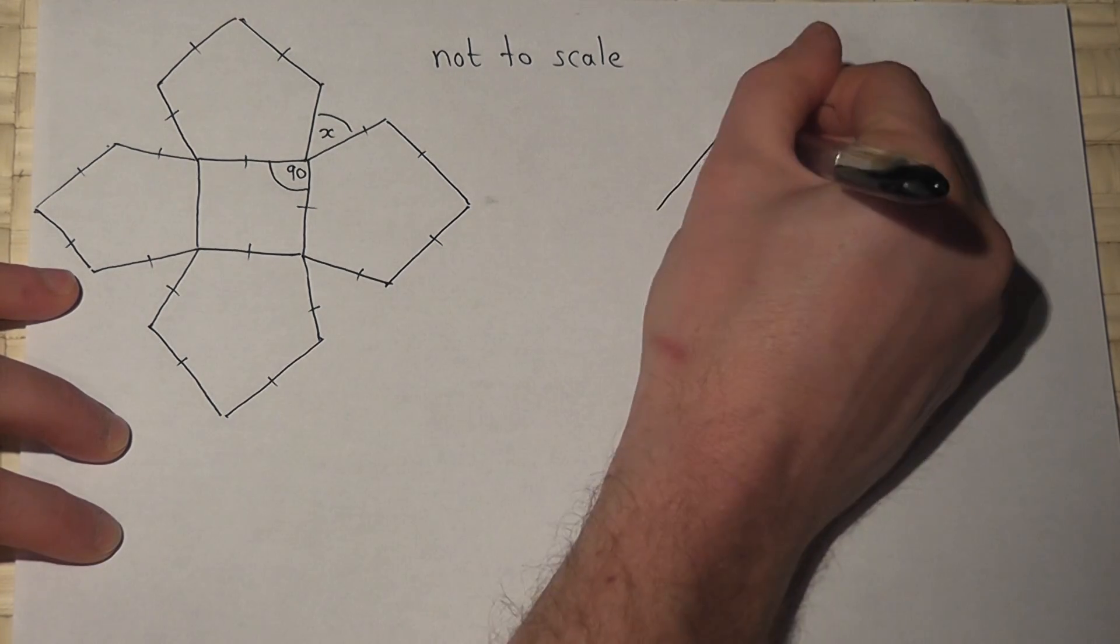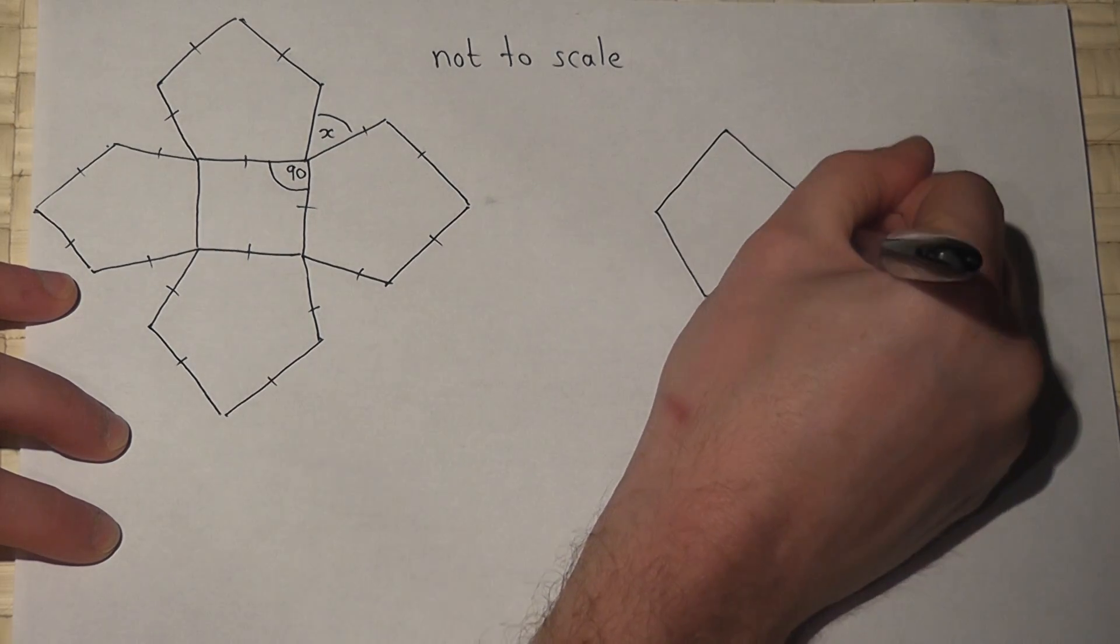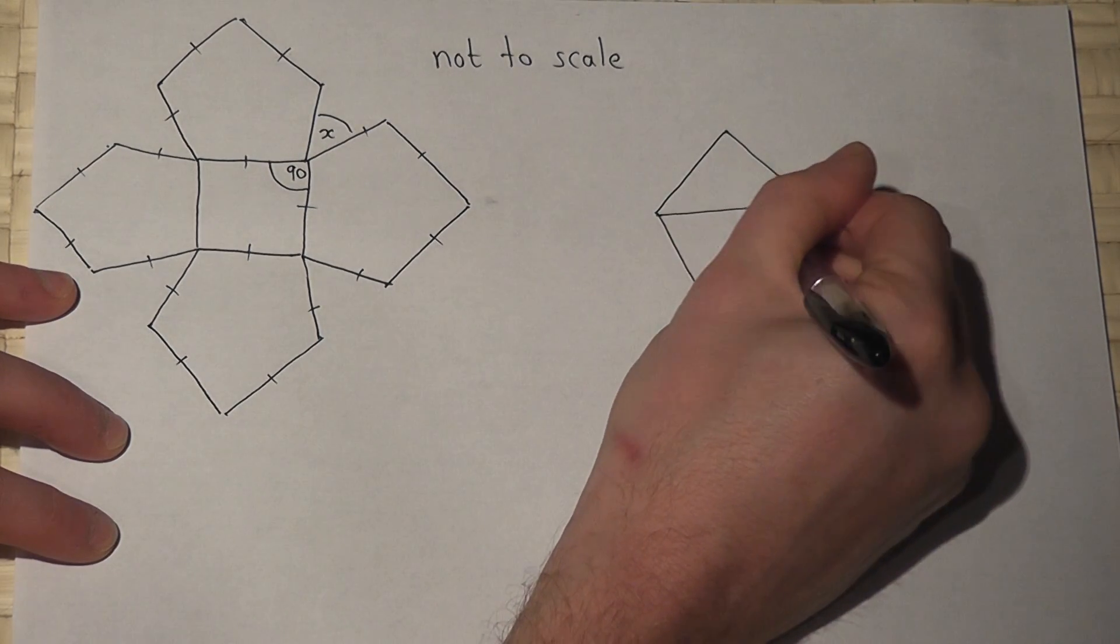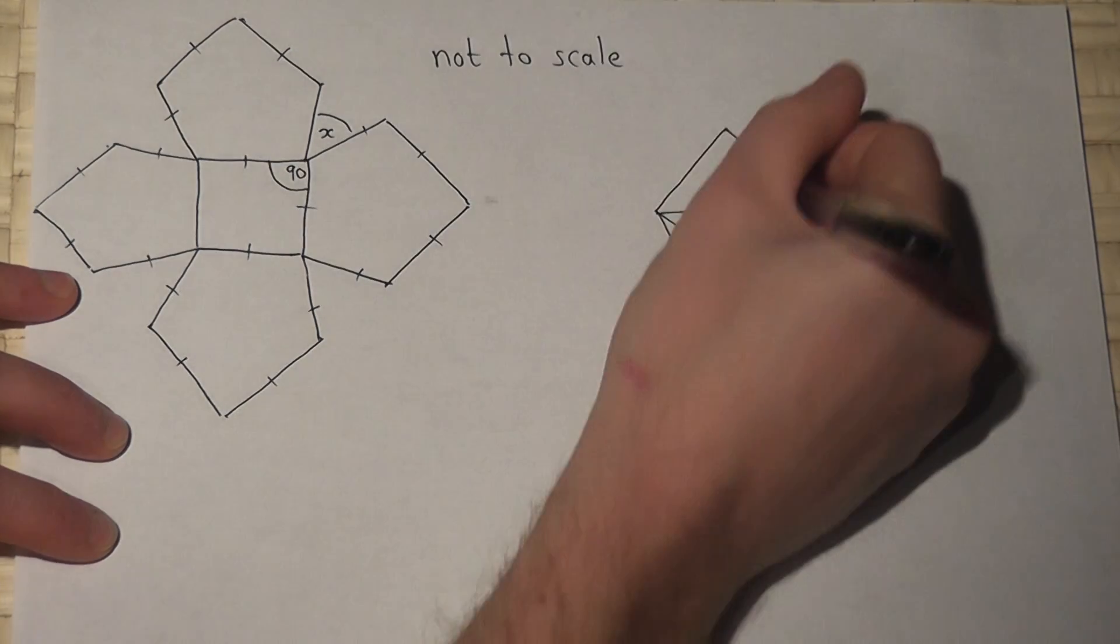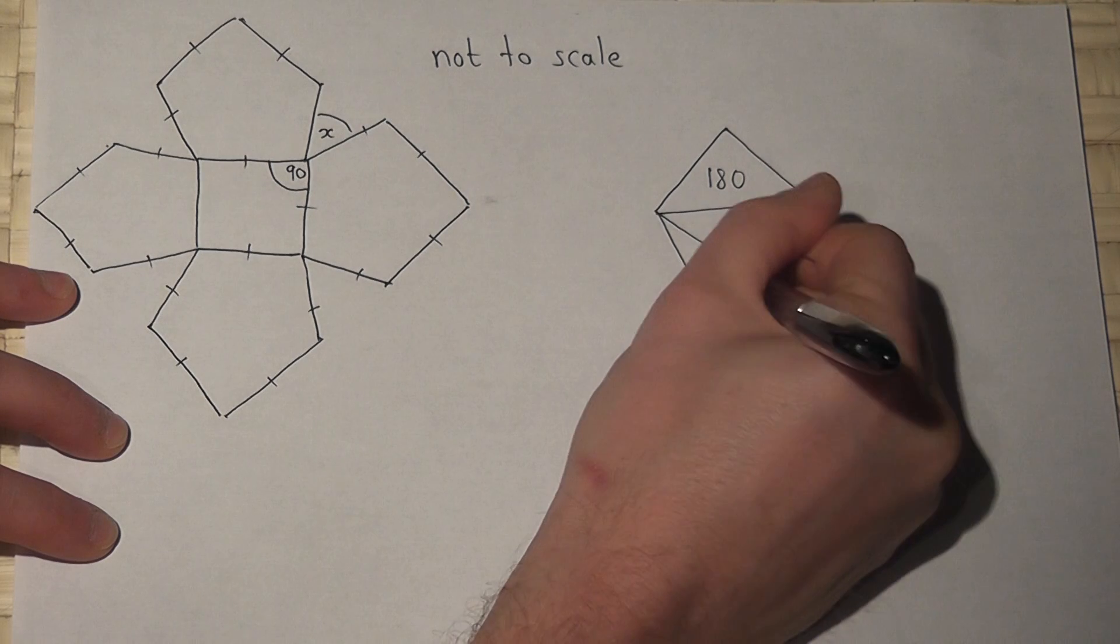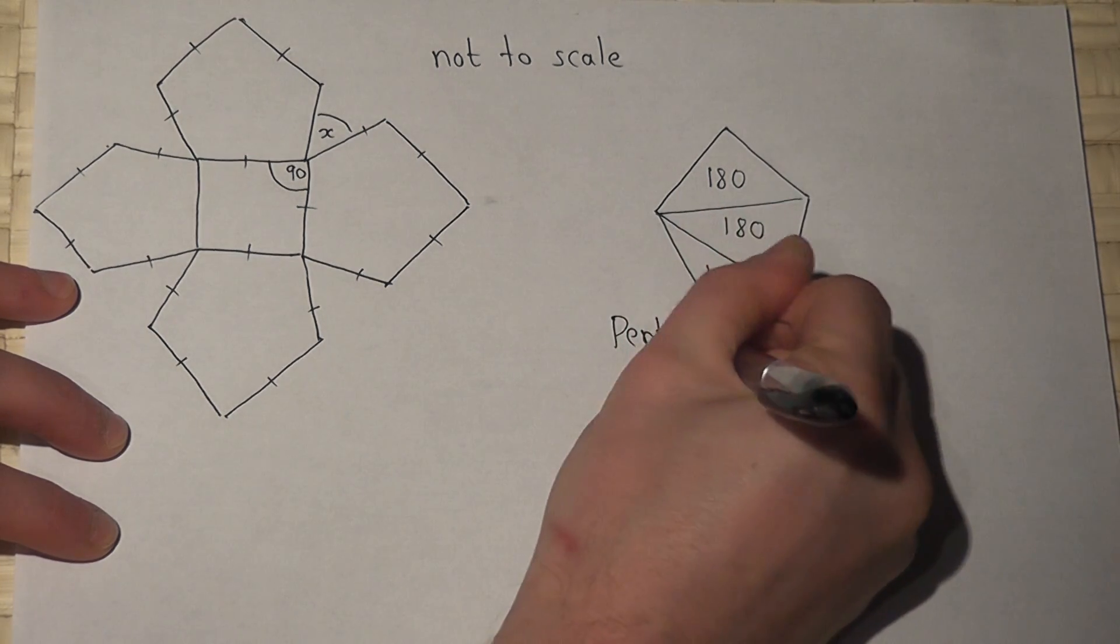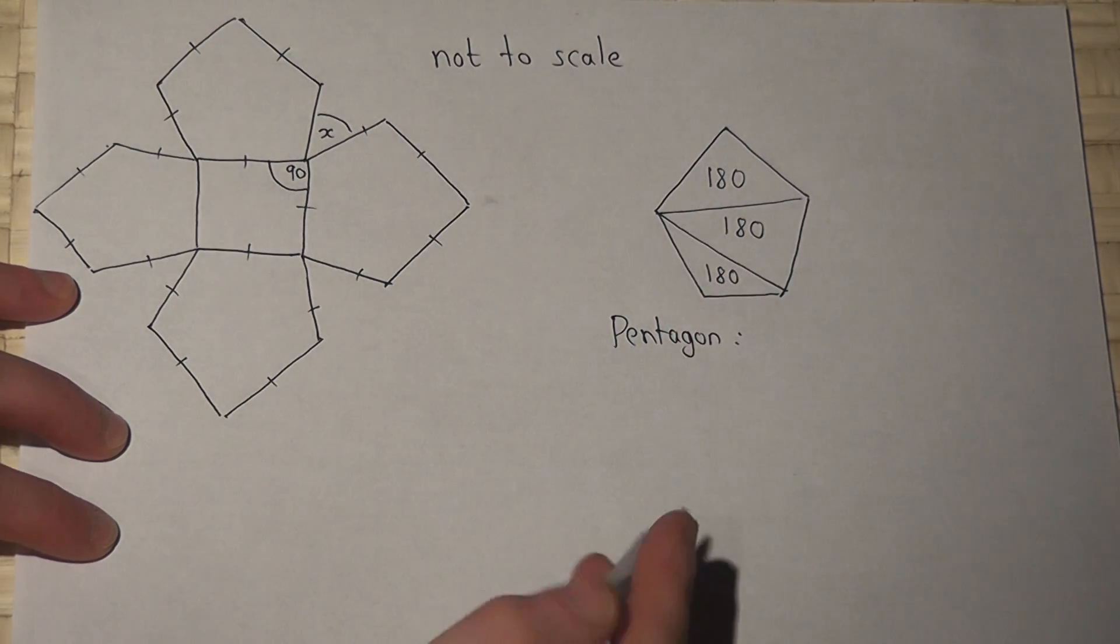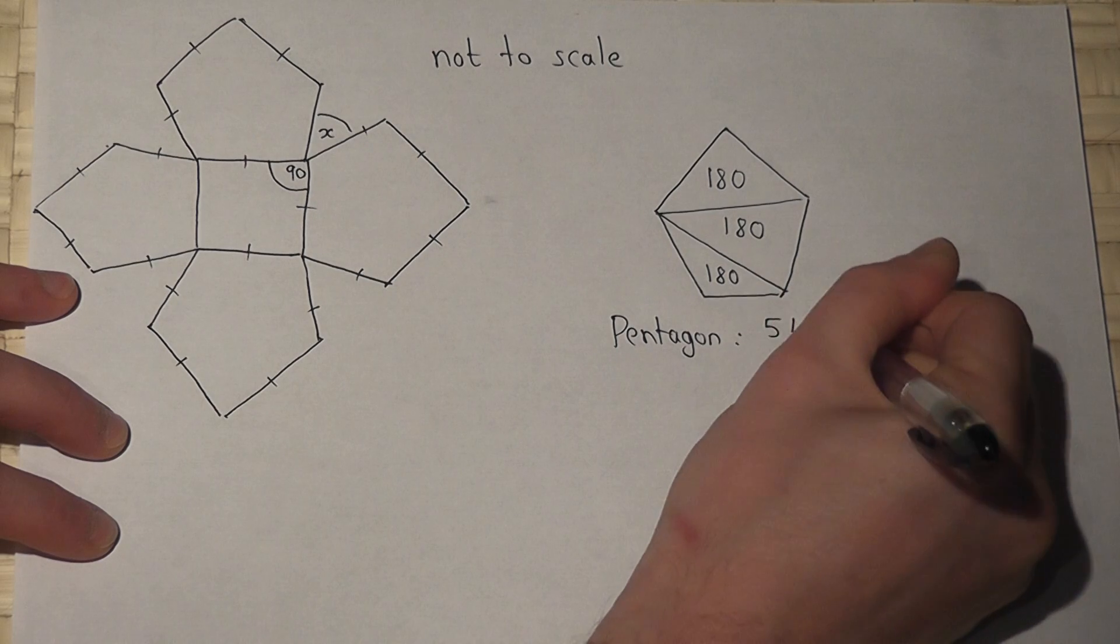Now if you imagine a pentagon like so, then this pentagon can be split into three triangles and each triangle has 180 degrees within it. So in a pentagon the angles add to three lots of 180, which is 540 degrees.